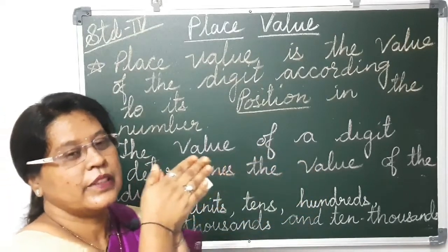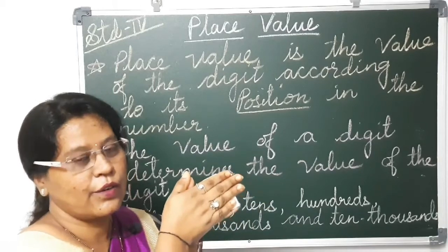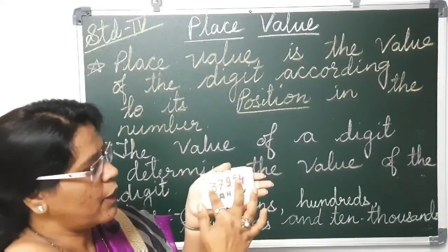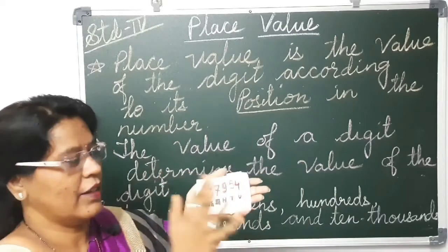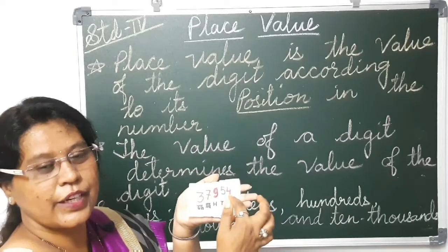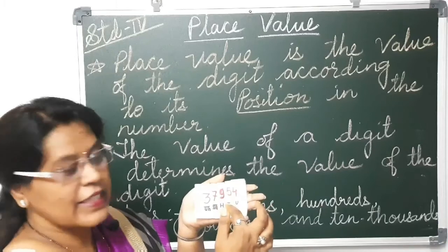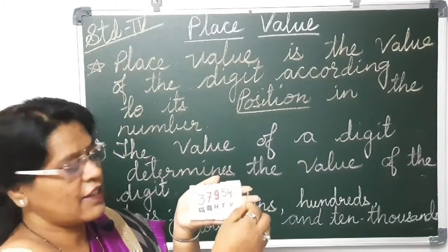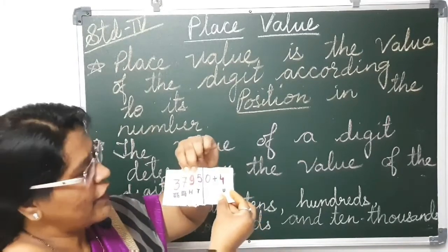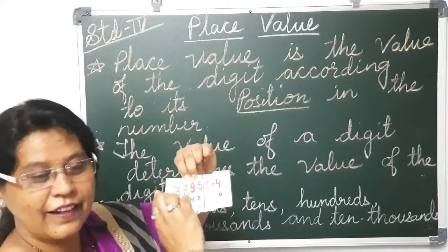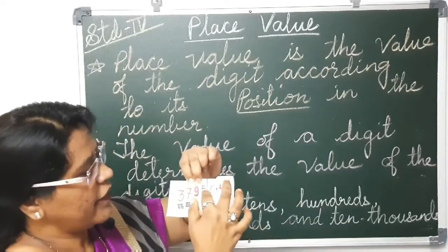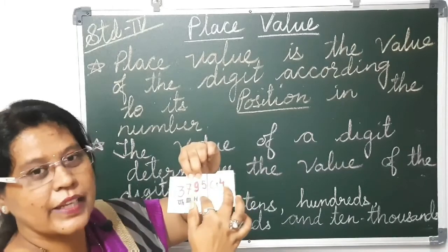Now here one more strip is there. Count the digits: 1, 2, 3, 4, 5 — so it is a 5 digit number. The 4 is in units place, so 4 into 1 is 4. Now 5 is in tens place, meaning it is 50. We are learning both things here — expanded form as well as place values. 5 into 10 is 50.